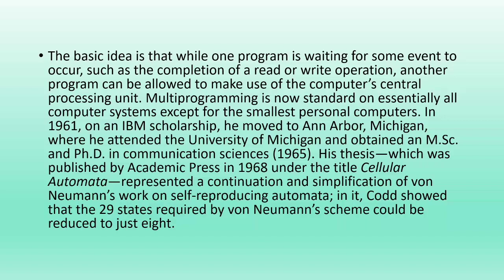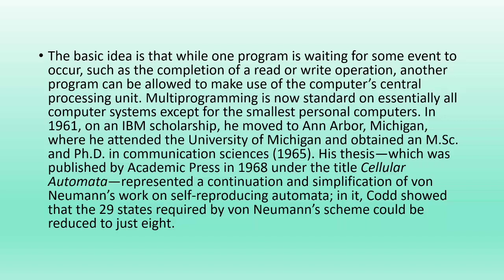In 1961, on an IBM scholarship, he moved to Ann Arbor, Michigan, where he attended the University of Michigan and obtained his MS and PhD in communication science. His thesis, which was published by Academic Press in 1968 under the title Cellular Automata, represented a continuation and simplification of von Neumann's work on self-reproducing automata. In it, Codd showed that the 29 states required by von Neumann's scheme could be reduced to just 8.